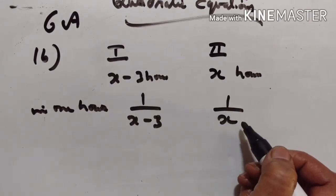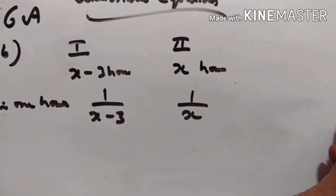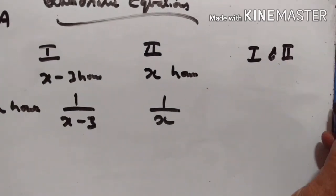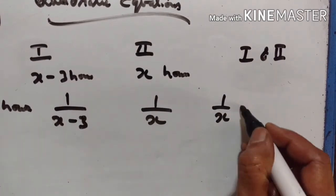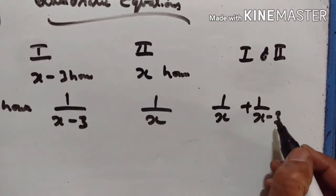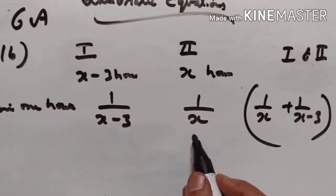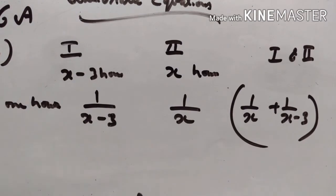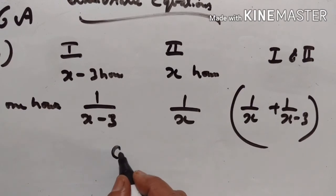The two pipes together can fill the cistern in six hours forty minutes. Together, pipes one and two in one hour can fill one upon x plus one upon x minus three part of the cistern. It is given that both pipes together fill one cistern in six hours forty minutes.